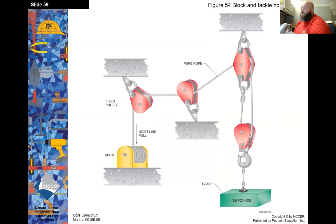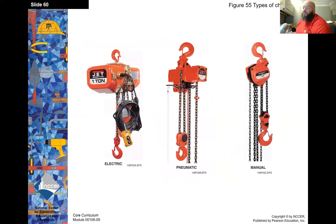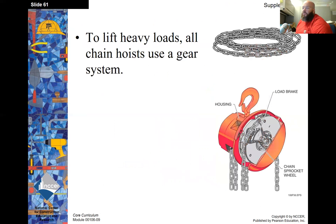The block and tackle hoist system uses pulleys to decrease the effective load. Two pulleys — one above the other — with a cable looping through the lower pulley reduces the amount of force needed to lift a thousand pounds. Different chain hoists are also available; to lift heavy loads, all chain hoists use a gear system, so your force spinning the sprocket is geared down and slows down the lifting force.